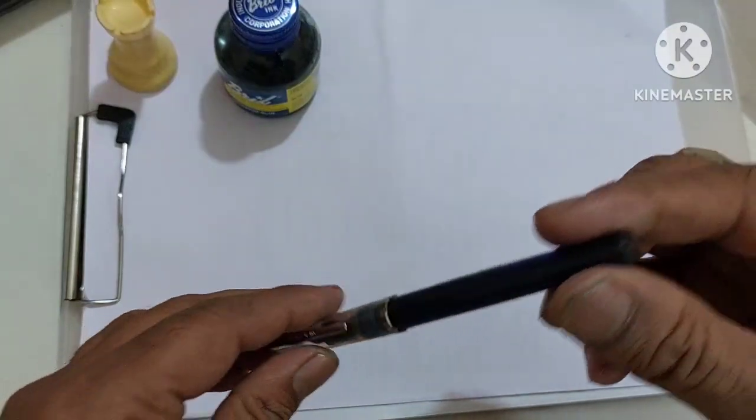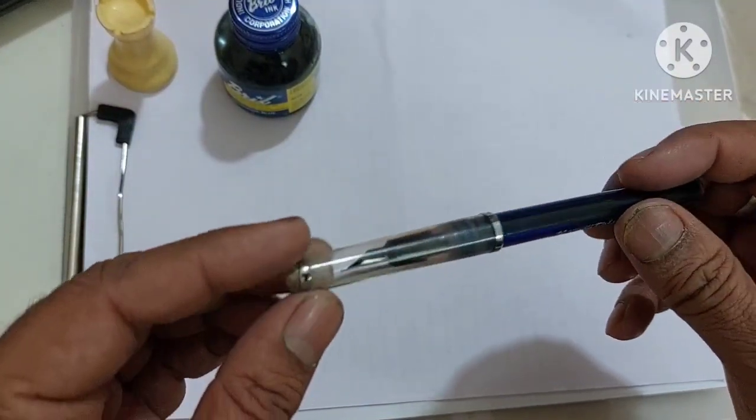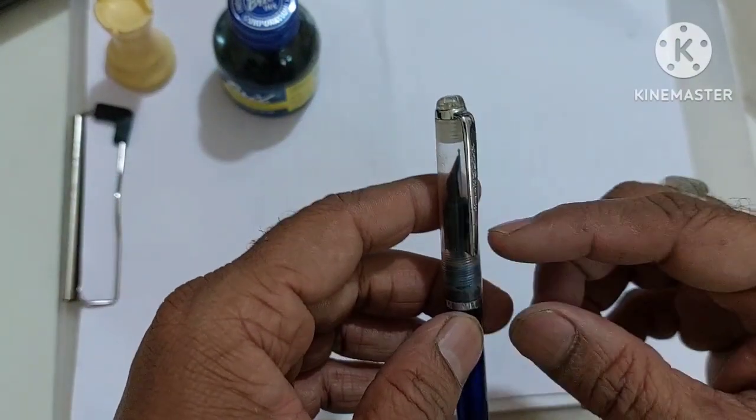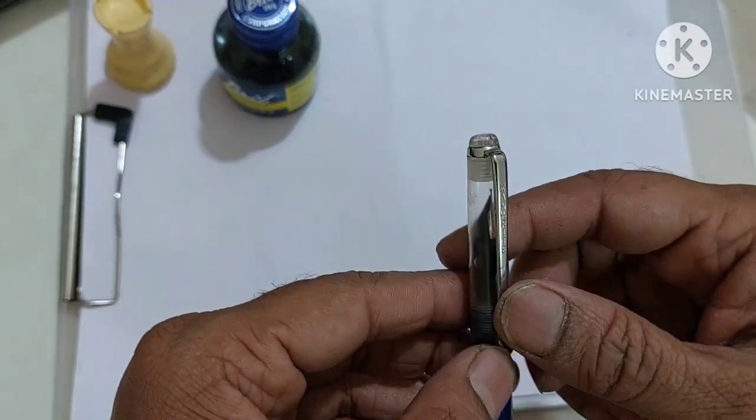So let us see the parts of the pen. It is a simple pen, just the barrel and the cap.